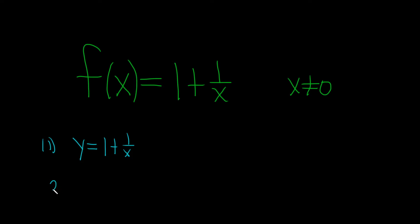The second step is to switch your x and y. So here it becomes x, and here you get 1 plus 1 over y.